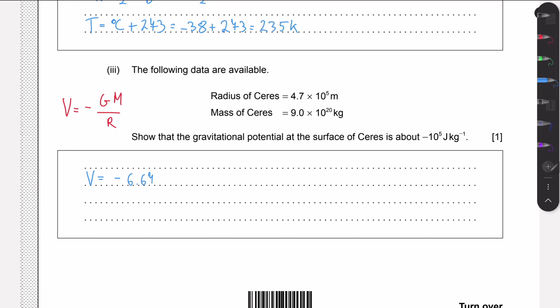So minus 6.67 times 10 to the minus 11 times 9 times 10 to the 20 over 4.7 times 10 to the 5. This will give us minus 1.3 times 10 to the 5 Joules per kilogram. Then this is approximately minus 10 to the 5 Joules per kilogram. I recommend usually writing down this precise value and then writing this approximate symbol so that your examiner will see that you calculated it correctly and then you approximately show that this is the gravitational potential in this case.